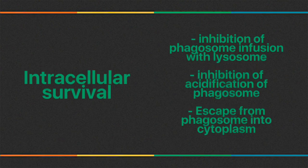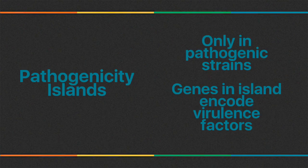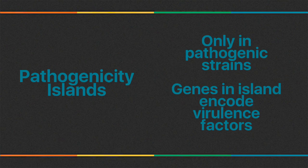Pathogenic genes are clustered in pathogenicity islands encoding virulence factors. Genes encoding adhesins, invasins, and exotoxins are adjacent to each other on these islands. Pathogenicity islands cannot replicate without the bacterial chromosome, unlike plasmids and bacteriophages. They are found commonly in many gram-positive cocci and gram-negative rods.